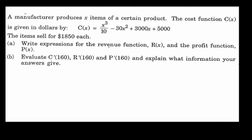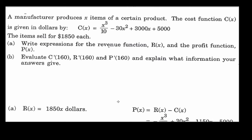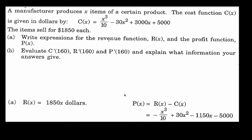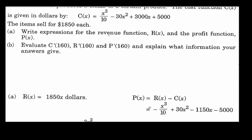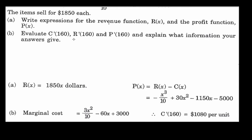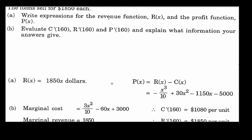Now a more complicated cost function — for an item selling for $1,850 each, like a big screen TV. The revenue function is simply R(x) = 1850x, since each unit sells for $1,850. The profit function is P(x) = 1850x minus the cost function. To maximize profit, we take the derivative and set it equal to zero.